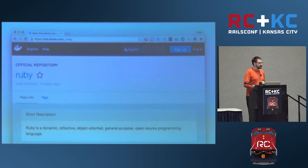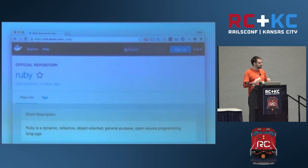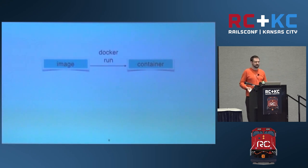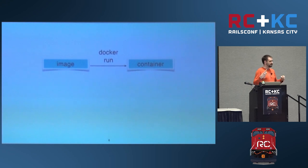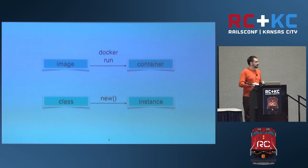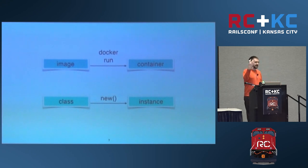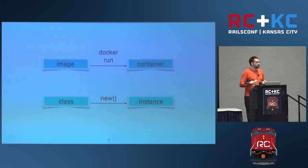Jane says she's heard about images — there are images you can build off of, like the official Ruby image maintained by Docker. You can put your Ruby code into an image built off of it. Jane pauses to ask about the relationship between images and containers. An image is the base of what you're going to run — the deployable unit — while a container is the running instance. Drawing a Ruby analogy: the image is like a class that defines what's there, and the container is like an object instance — an individual running piece of that.